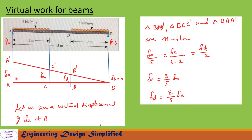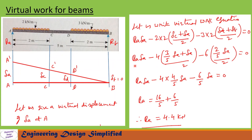To find reaction at A (R_A), give a virtual displacement of δA at A. The beam assumes position B-D'-C'-A'. Using similar triangles B-D-D', B-C-C', B-A-A', with δB = 0: δA/5 = δC/(5−2) = δD/2. From this: δC = (3/5)·δA, and δD = (2/5)·δA. Writing the virtual work equation: R_A·δA − 2×2×(δC + δA)/2 − 3×2×(δD + δB)/2 = 0.